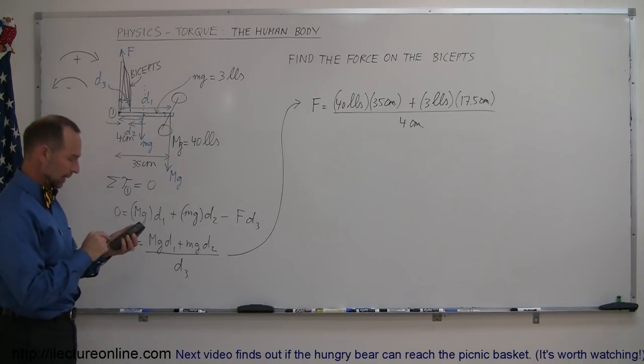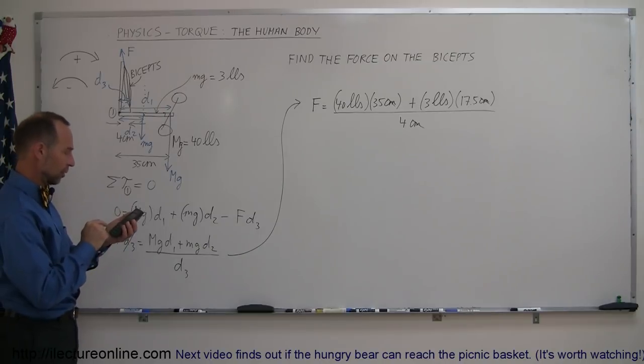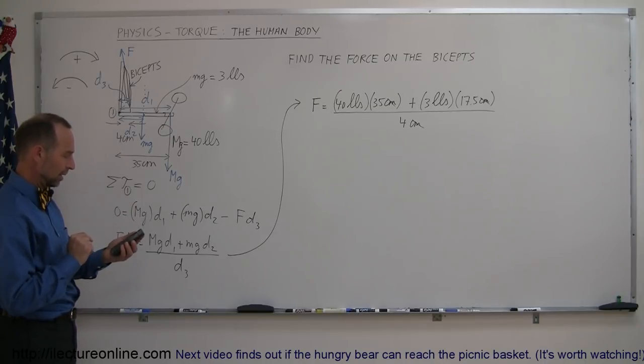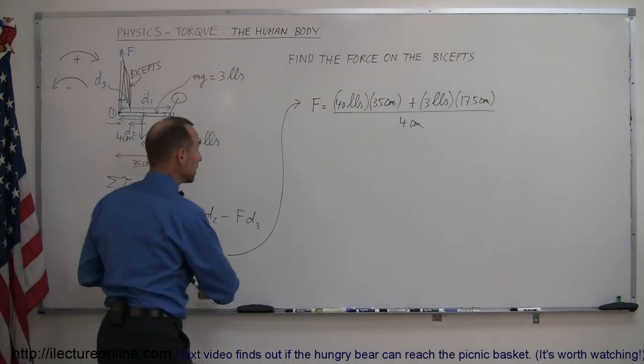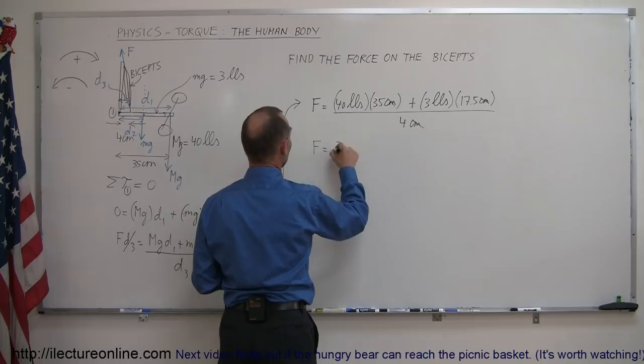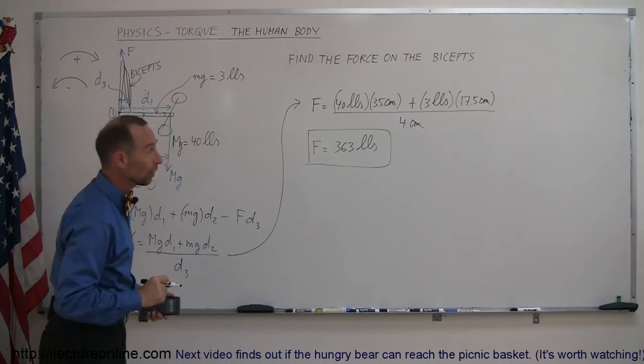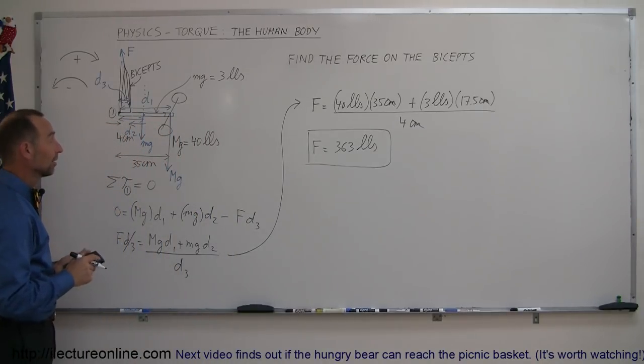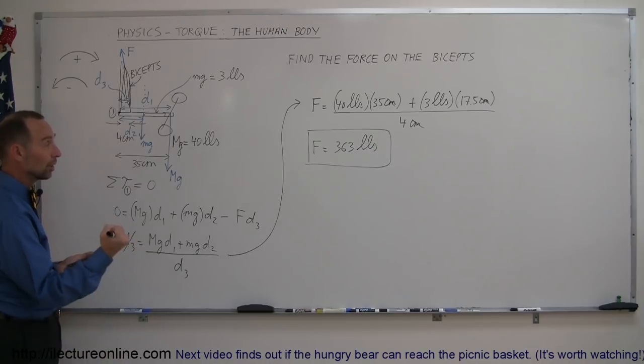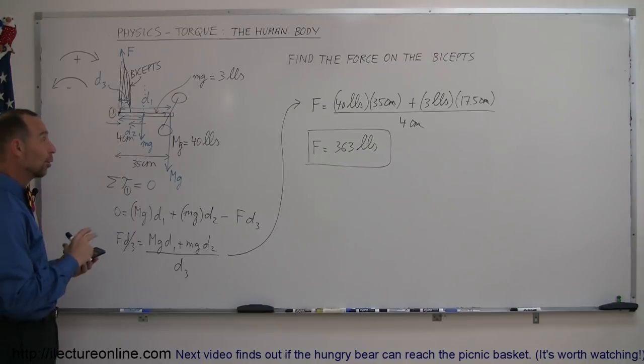Now with the calculator let's find out how much force a bicep requires to lift a 40 pound barbell. 40 times 35 plus 3 times 17.5 and then divide that by 4 and it's 363 pounds. So the force your bicep is 363 pounds, that's quite surprising a lot more than what you're actually lifting. Simply lifting a 40 pound barbell with one arm requires the force of 363 pounds in your biceps, your muscles are a whole lot stronger than you thought they were. That's how you do that problem, let's see if I can come up with another interesting example.